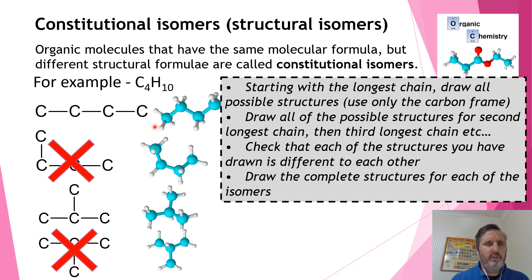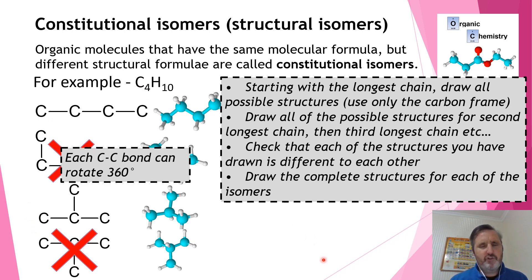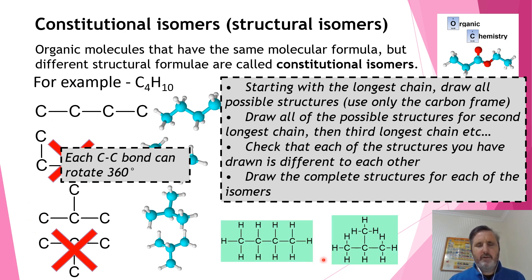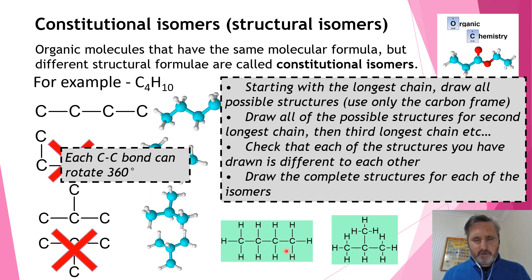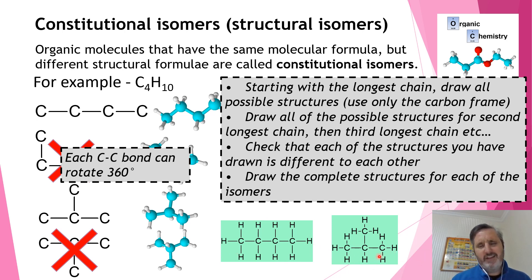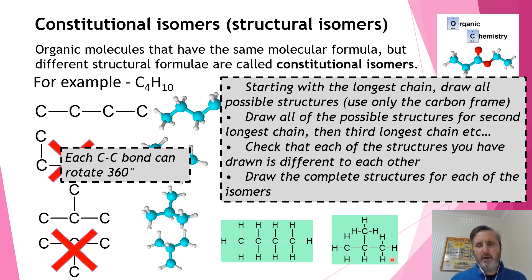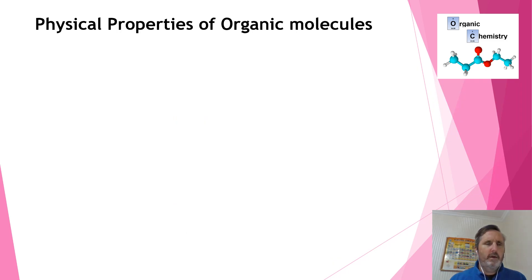So for C4H10 there are only two constitutional isomers. Adding the hydrogens, we get the two complete molecules. You can confirm they are different molecules by naming them — they'll have different names. The first is called butane. The second is 2-methylpropane; you don't need the '2' locant because the methyl group can only come off the second carbon in propane.